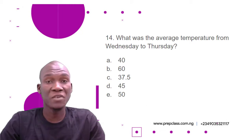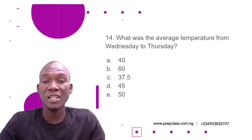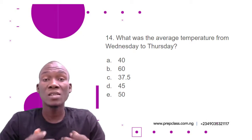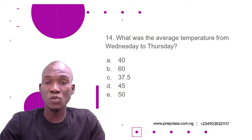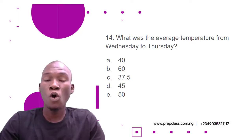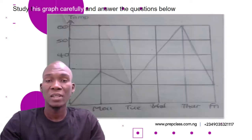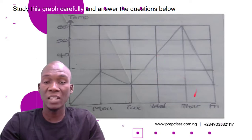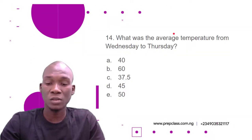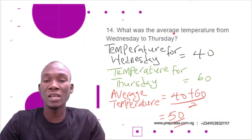Question 14: What was the average temperature from Wednesday to Thursday? Remember, average means we add up the values then divide by the number of values. The options are: A) 40, B) 60, C) 37.5, D) 45, E) 50. To answer this question we refer back to the graph. The temperature for Wednesday is 40 and the temperature for Thursday is 60.